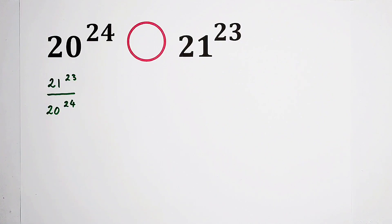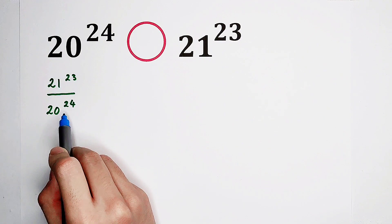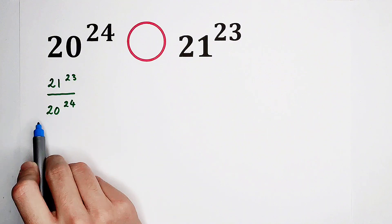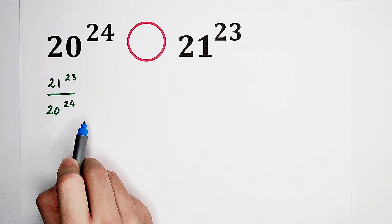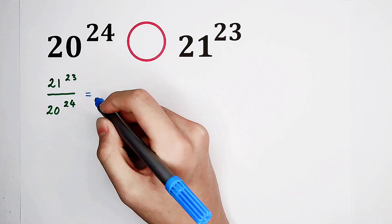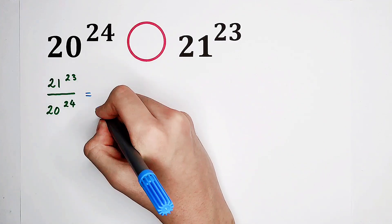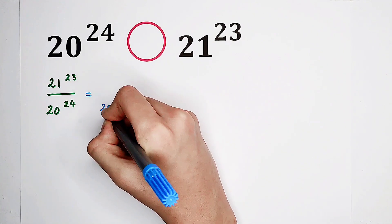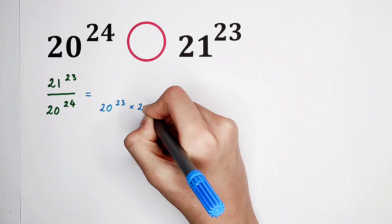We get this expression. Then what shall we do? You see, 23 and 24 are the exponents. Now, we can write this 24 as 23 plus 1, then 20 to the power of 24 can be written as 20 to the power of 23 times 20. So our denominator can be written as 20 to the power of 23 times 20.